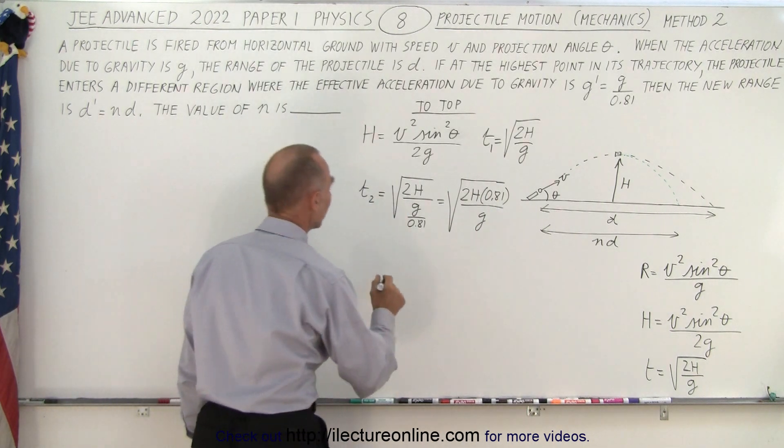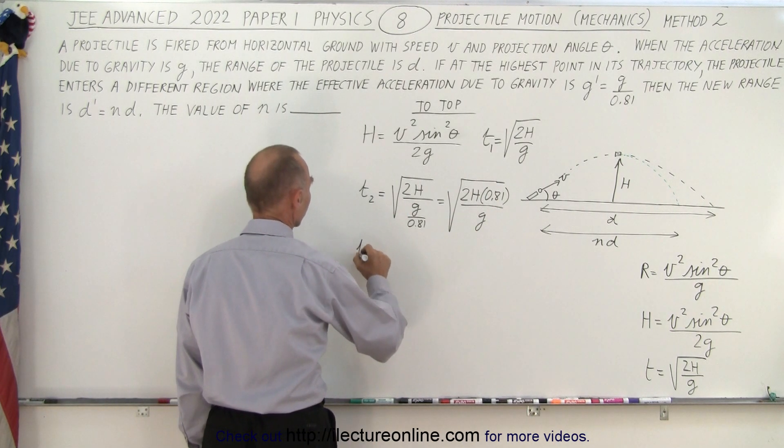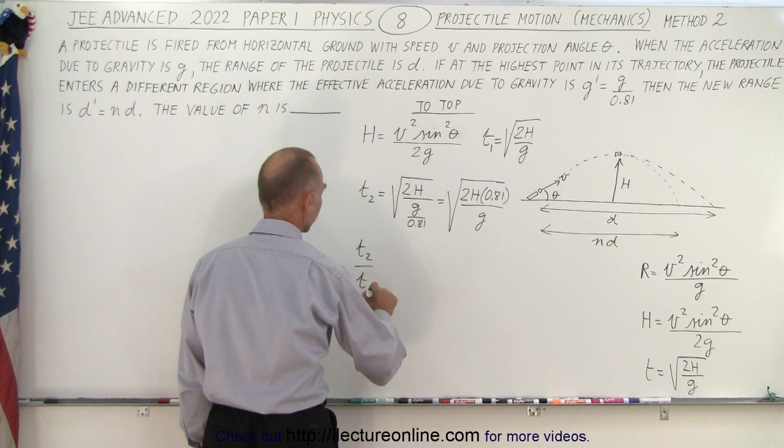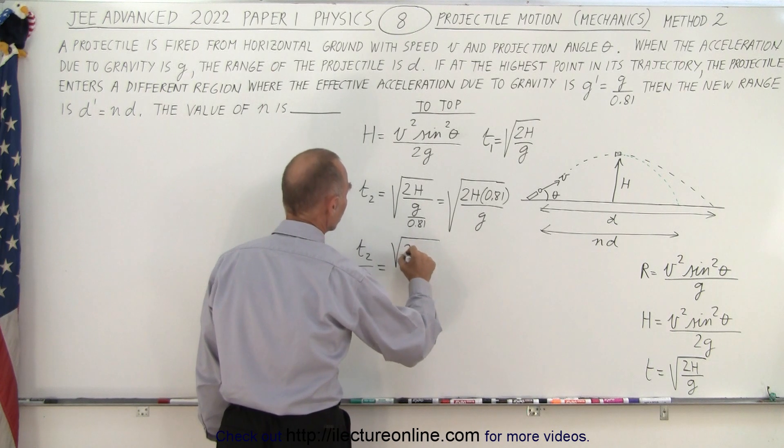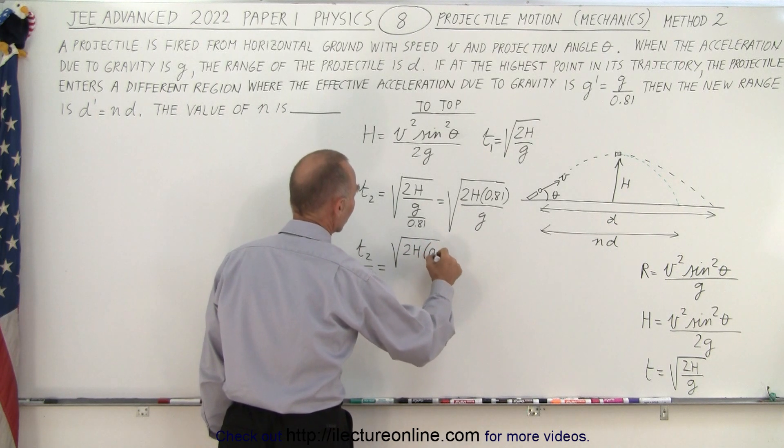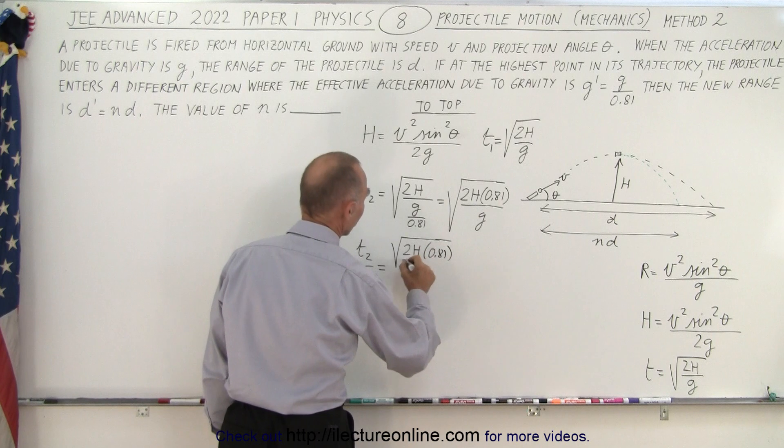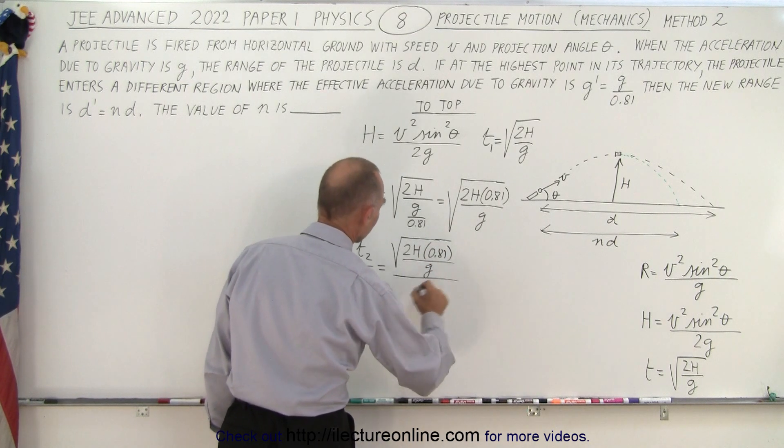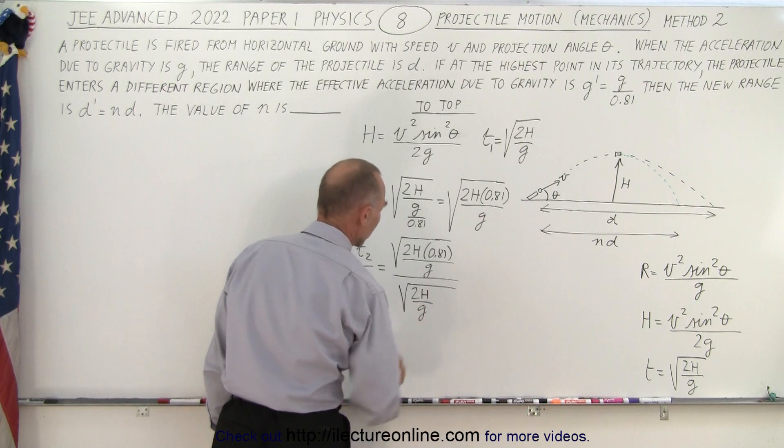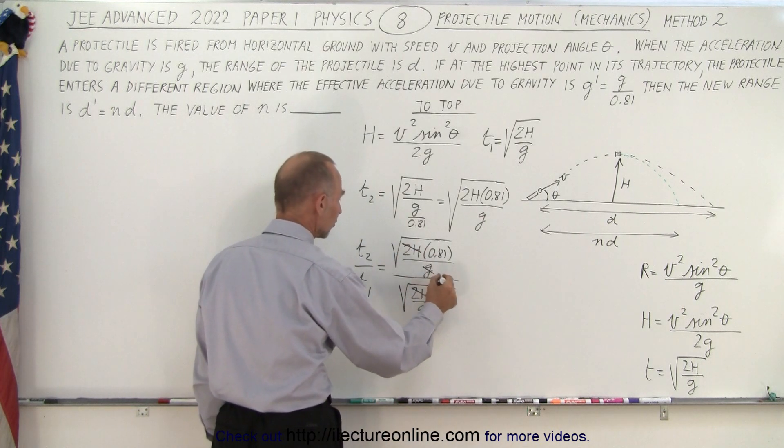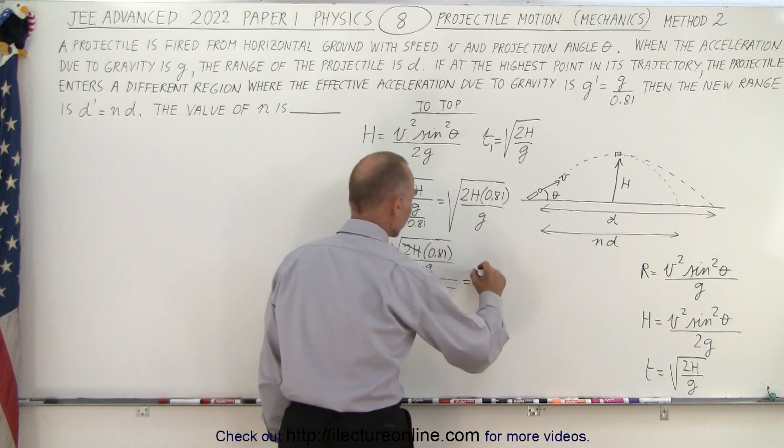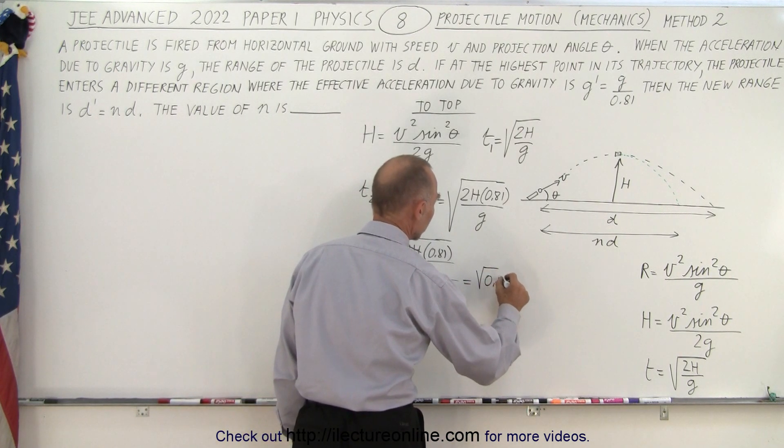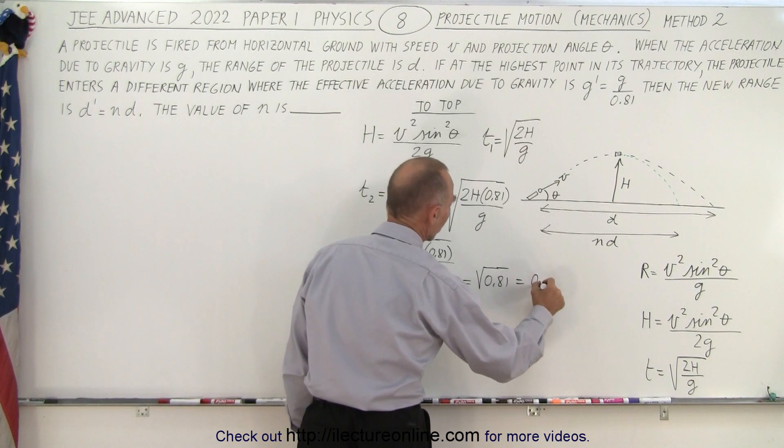So what I can then do is I can now find the ratio of t2 to t1. And the ratio of t2 to t1 is going to be the square root of 2h times 0.81 divided by g, and divide this by the square root of 2h over g. And right away you see that the 2h's cancel out, that the g's cancel out, and it simply becomes the square root of 0.81, which is equal to 0.9.